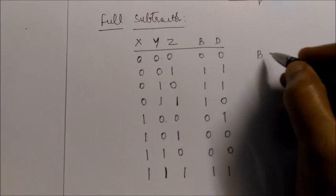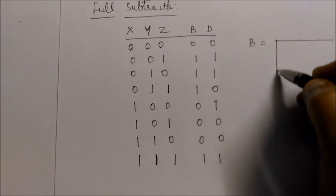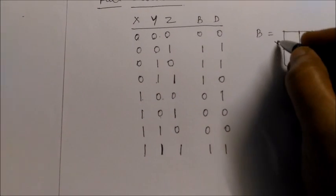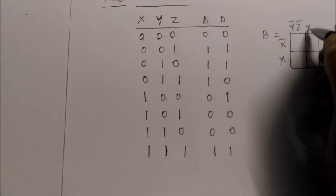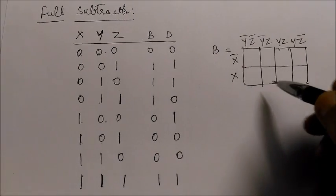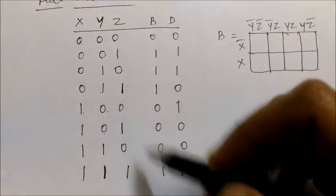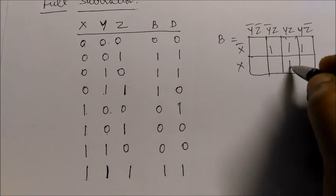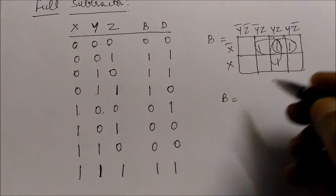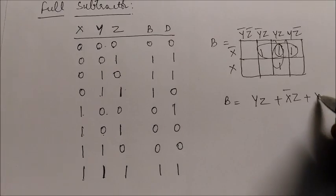Now, if we write the expressions for borrow and difference, let us use a 3-variable K-map for borrow. The K-map has x-bar and x on one axis, and y-bar z-bar, y-bar z, yz, yz-bar on the other. Borrow is 1 for minterms 1, 2, 3, and 7. Mapping these, the expression for borrow is: yz + x-bar·z + x-bar·y.